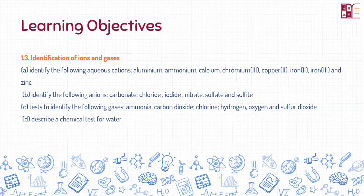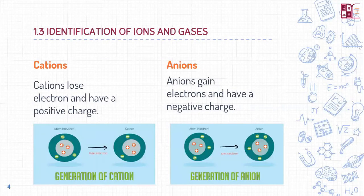I am also going to describe a chemical test for water as well. So let's begin with today's topic. Starting with this topic, we need to know what an ion is. Ions are of two types — they are either cations or anions.